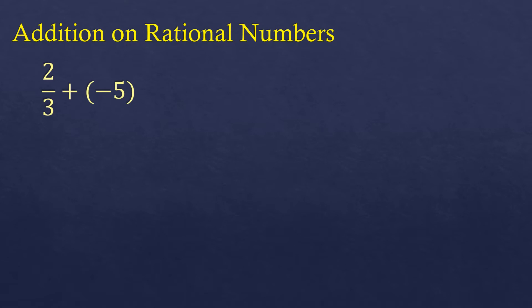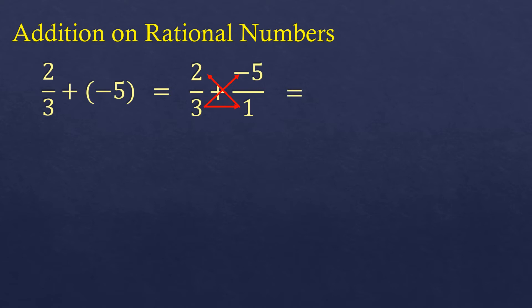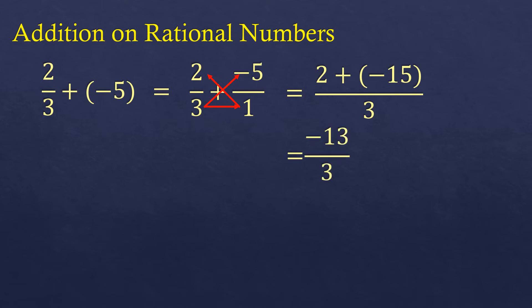Still in addition of rational numbers, here's another type: two-thirds plus negative five. Integers are also rational numbers. We transform negative five by rewriting it as negative five over one — any whole number written over one is exactly the same. Then cross-multiply: two times one is two, three times negative five is negative 15, and three times one at the bottom is three. Combining numerators: two plus negative 15 is negative 13 over three. Converting to mixed form gives negative four and one-third.